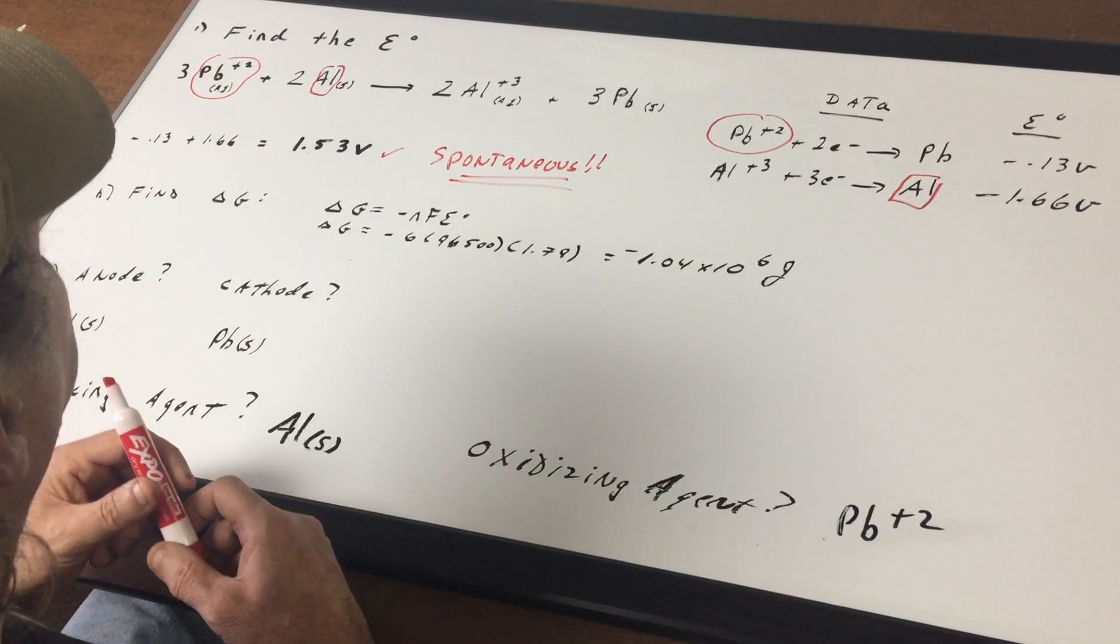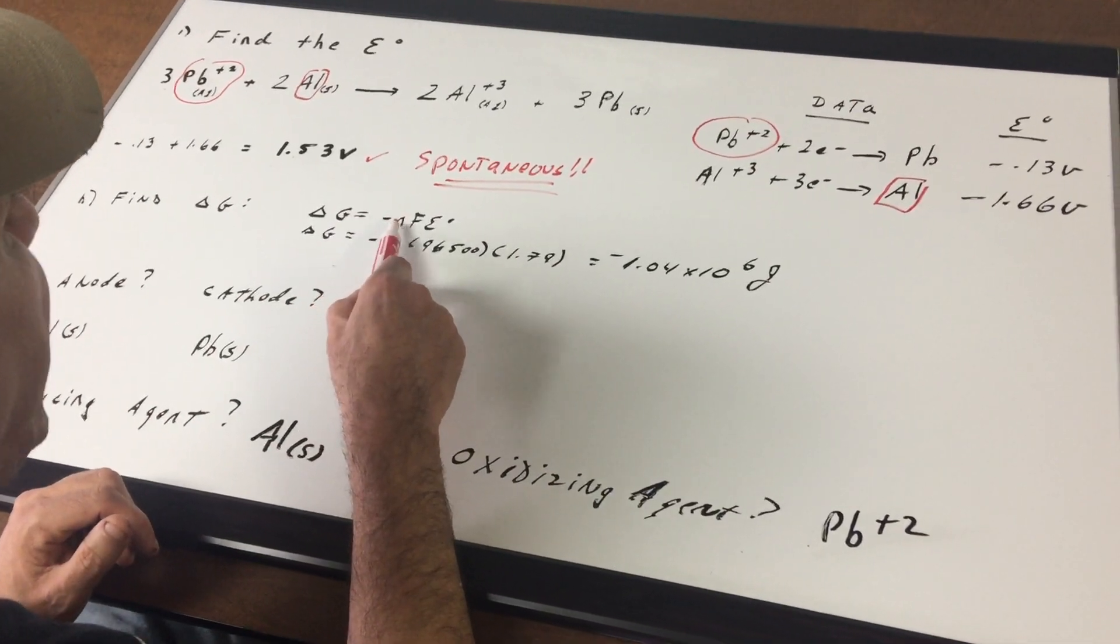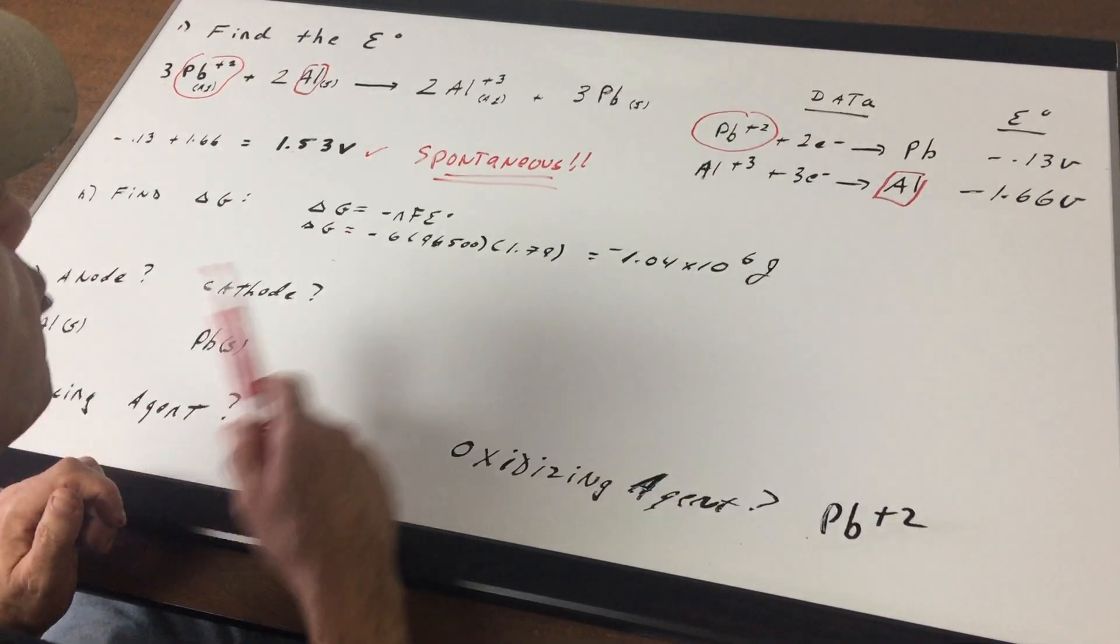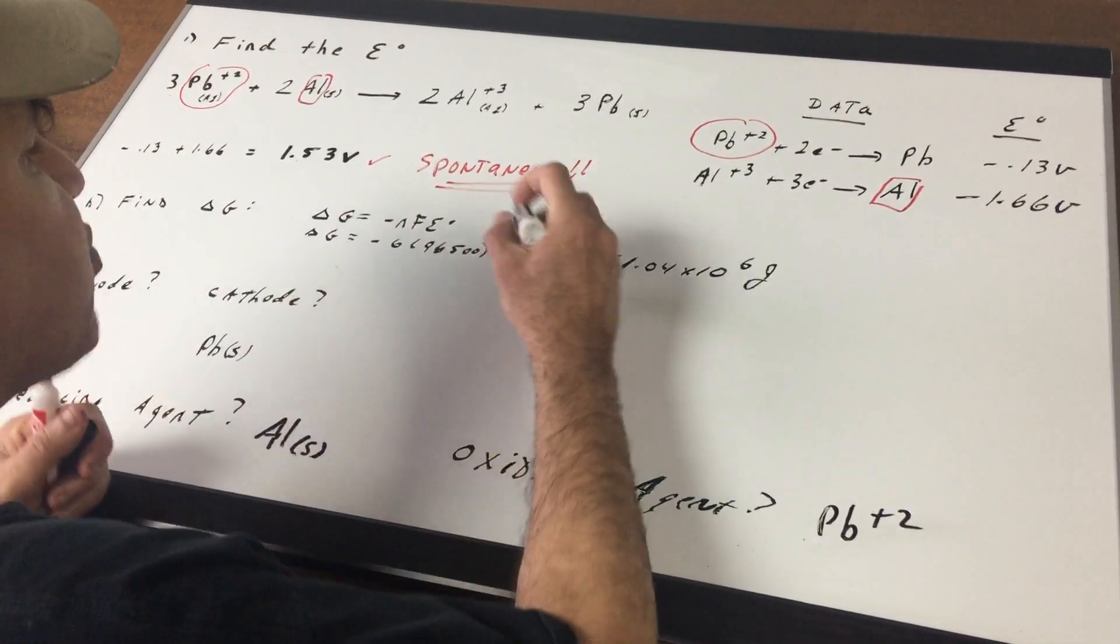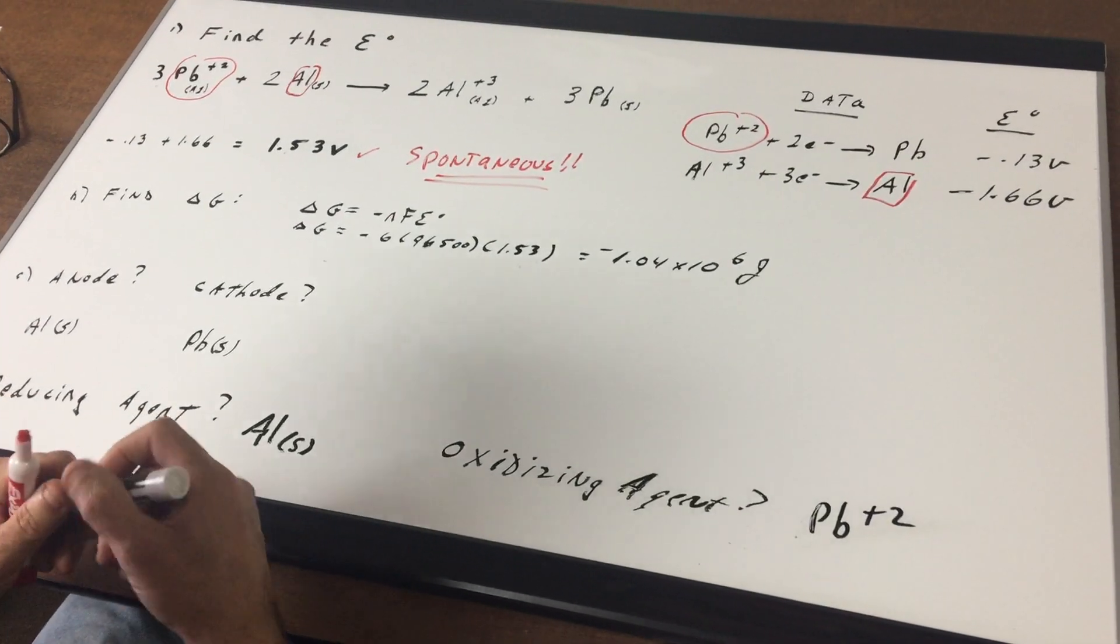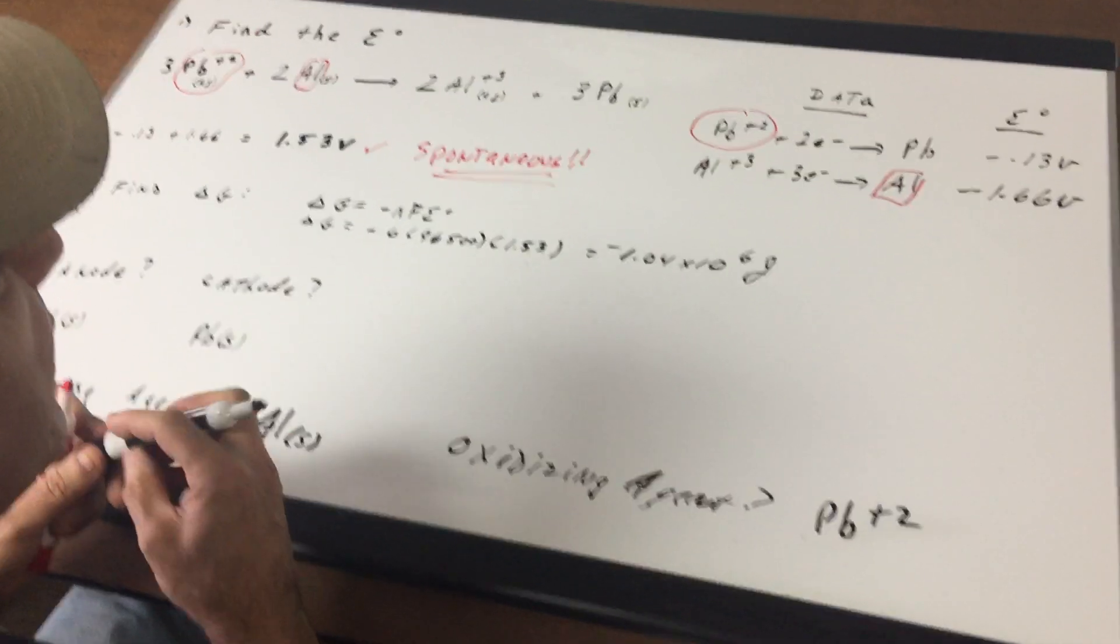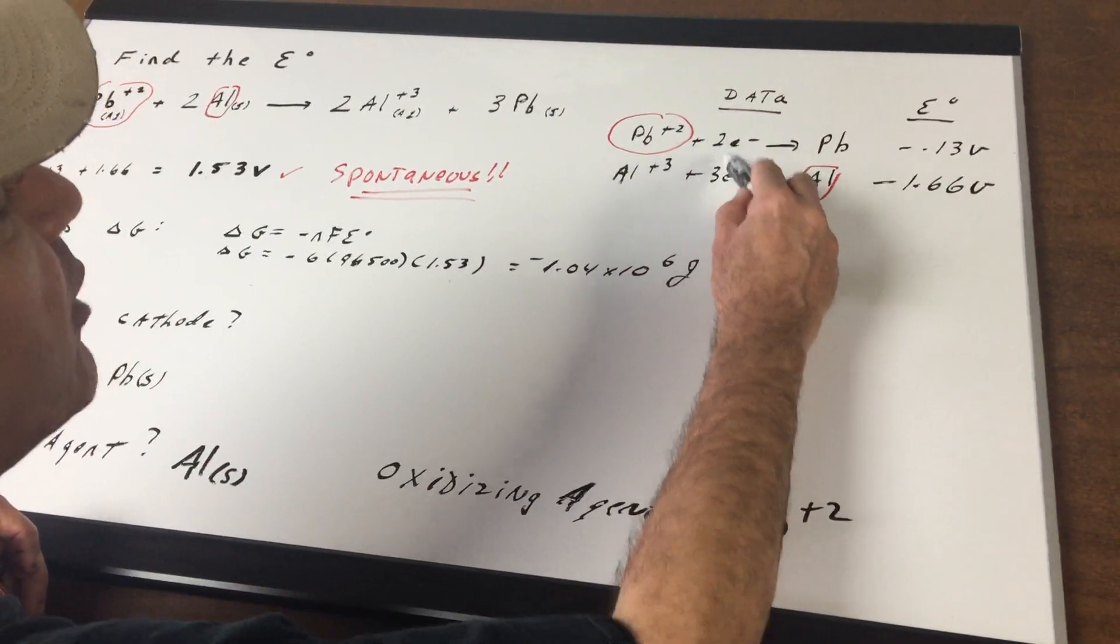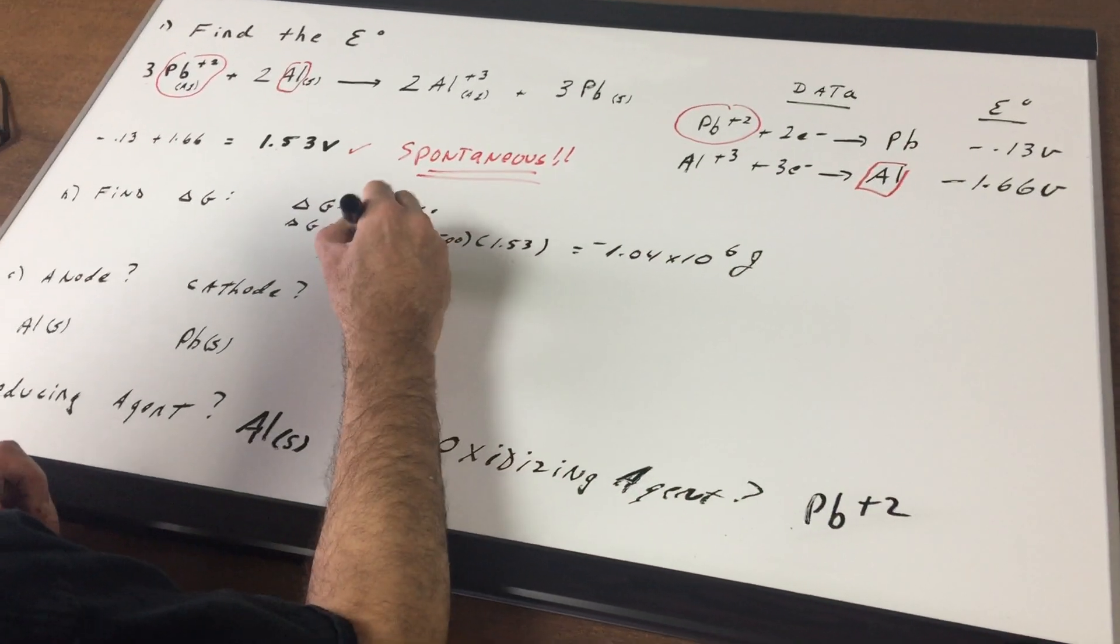Part B, I ask you to find the delta G. The delta G is given by minus nfE0. The f is a constant 96,500, the E0 we already calculated that was 1.53, so I put in 1.53. The n value is the number of electrons transferred and I get a lot of emails on this. All you would do is look at the data and look at the common denominator between a three and a two. The common denominator is a six, so that's why I use a six.